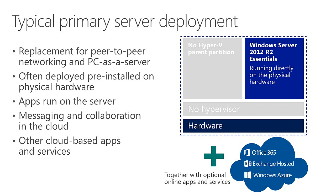One of the primary values of introducing Essentials into the environment is to really improve data protection. You can also run applications on the server — providing a very stable central platform for line-of-business applications. Essentials can work together with messaging and collaboration software or services available in the cloud as well as on-premises. With a physical deployment, you just have the hardware layer and Windows Server 2012 R2 Essentials running directly on top of that hardware.